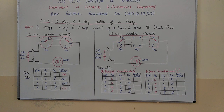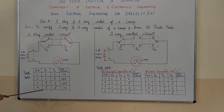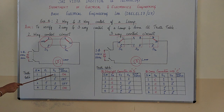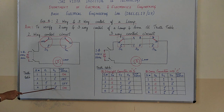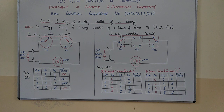Now let us note down the truth table for this two-way control circuit. We saw the cases where switch S1 was placed at 1 and 1 dash, and switch S2 was placed at 2 and 2 dash. When switch S1 was at 1 and switch S2 was at 2, the lamp glowed. In the other cases the lamp was off — only in a closed circuit condition does current complete the path and cause the lamp to glow, not in an open circuit.